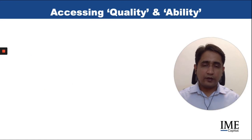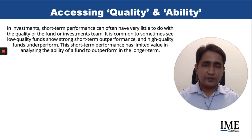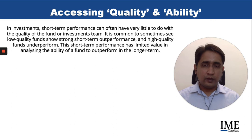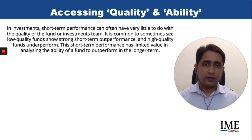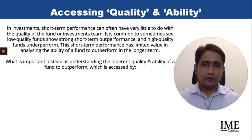Another common error relationship managers make in fund selection is confusing short-term performance to be some indicator of quality or ability of a fund to outperform in the future. The reality is that in investments, it's very often seen that a low quality fund can actually deliver outperformance over the short term, whereas high quality funds are actually underperforming based on what market conditions are at that point in time. The simple reality is that short-term performance is not an indication of either the quality of the fund or its ability to outperform in the future.